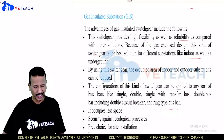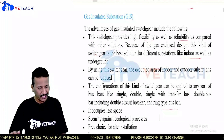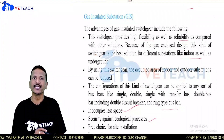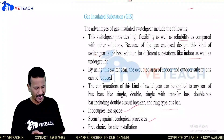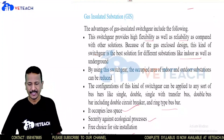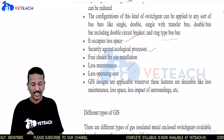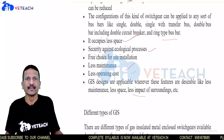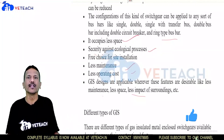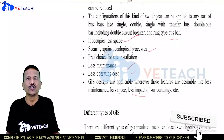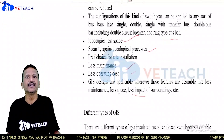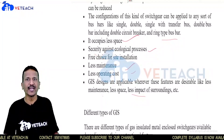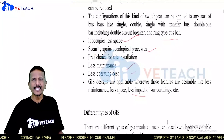The advantages of GIS include: very less space required, high security — within a short time we can control and overcome all faults — less maintenance, and lower operating costs. GIS designs are applicable wherever these features are desirable. In contrast, AIS outdoor substations require large space and bigger equipment for maintenance.